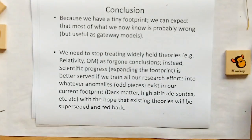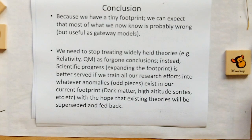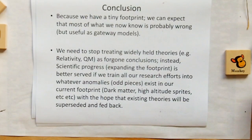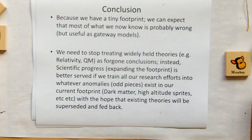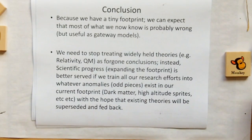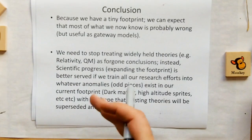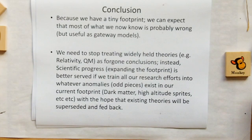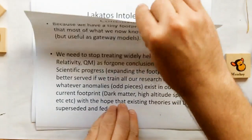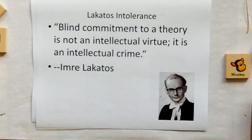And that may not be the end. Because we have a tiny footprint, we can expect that most of what we know is probably wrong — but useful as gateway models using the gateway feedback paradigm. We need to stop treating widely held theories — for example, relativity and quantum theory — as foregone conclusions. Instead, scientific progress, expanding our footprint, is better served if we train all of our research efforts into whatever anomalies and odd pieces exist in our current footprint — things like dark matter, high altitude sprites — with the hope that existing theories will be superseded and fed back. We should look forward to disproving what we think we know. Holding on steadfastly to what we know is not scientific progress. In the words of Imre Lakatos: blind commitment to a theory is not an intellectual virtue, it's an intellectual crime.